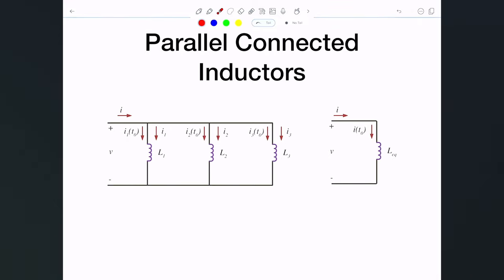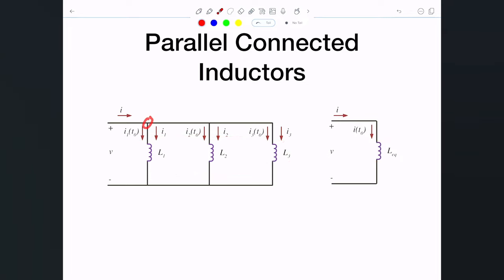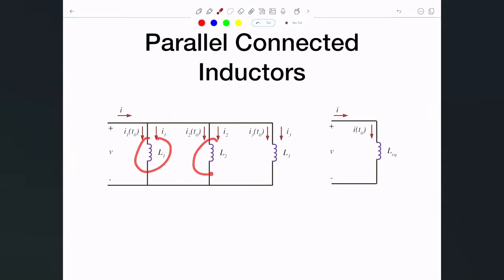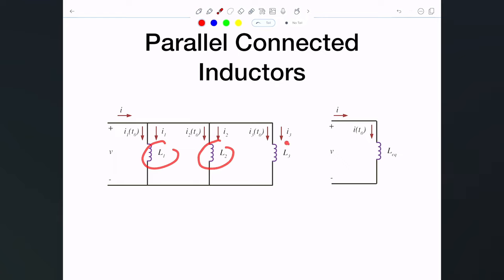Now let's look at how we connect inductors in parallel. We're interested in finding an equivalent inductor for three inductors connected in parallel. When connected in parallel, they share a pair of nodes, so L1, L2, and L3 all share the same voltage V across them. However, they don't share the current.